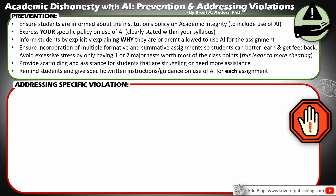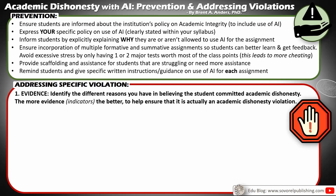Having said all that, there are still going to be instances where the student resorts to AI. So now we have to think about how we're going to address these specific violations. What we need to do first is identify the different reasons we have for believing that a student committed academic dishonesty. The more indicators — let's call them that rather than evidence at this point — the better, to help ensure that it actually is academic dishonesty and a real violation. We don't want to jump to conclusions, so we want to ensure that we have our indicators built up before making a decision or moving to the next step.